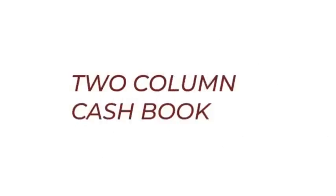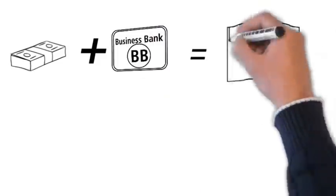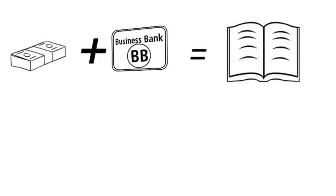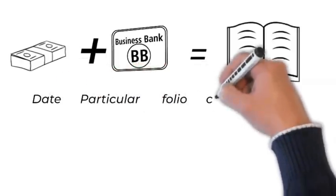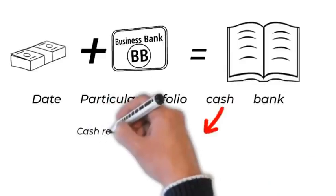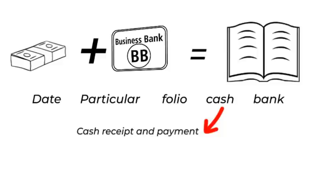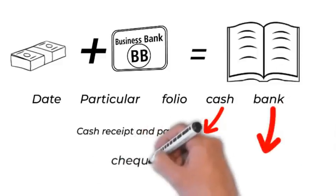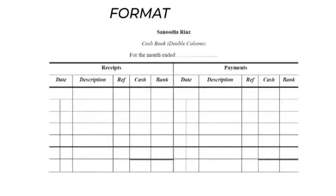We are discussing the two-column cash book. In this type of cash book, two separate accounts — cash and bank — are combined for the sake of convenience. There will be separate columns for date, particular, folio, cash and bank. Cash receipts and payments are recorded in the cash column, while cheques received and issued are recorded in the bank column. Below is the format of the two-column cash book.